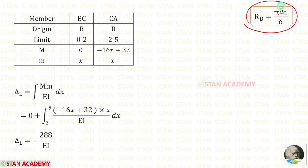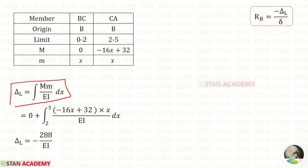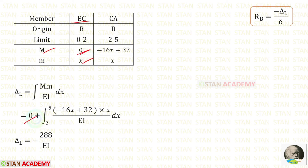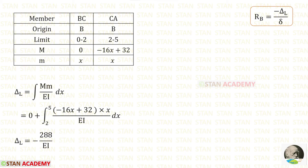Now let us find δL using the formula: δL = ∫(M·m / EI) dx. For member BC, M = 0, so the integral is 0. For member CA, the integration limits are 2 to 5, substituting the values of M and m. Using a calculator to perform the integration, we get δL = -288 / EI.